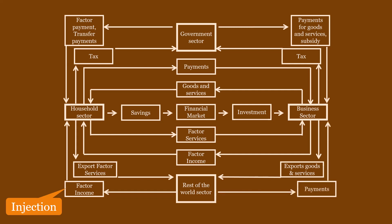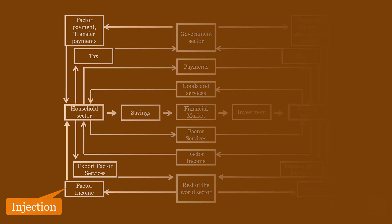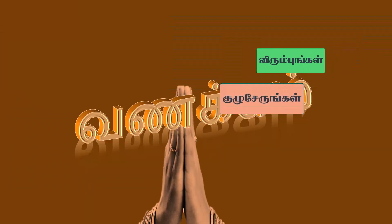This completes the circular flow of income in the 4-sector model. The key concepts are injections and leakages. Injections add to the flow, while leakages withdraw from it.